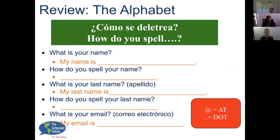We can use the alphabet to spell. In English, to ask how something is spelled, you say 'How do you spell?' Megan, ask Frances the first one. What is your name? My name is Frances. How do you spell your name? F-R-A-N-C-E-S. What is your last name? My last name is Foley. How do you spell your last name? F-O-L-E-Y.